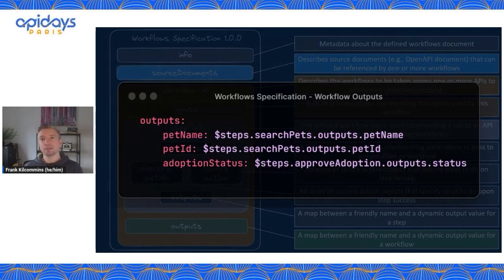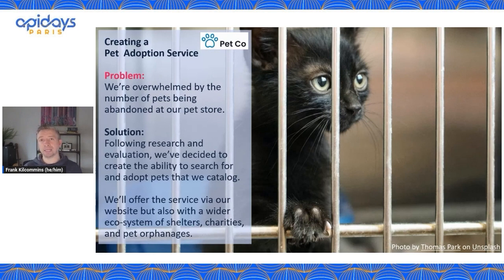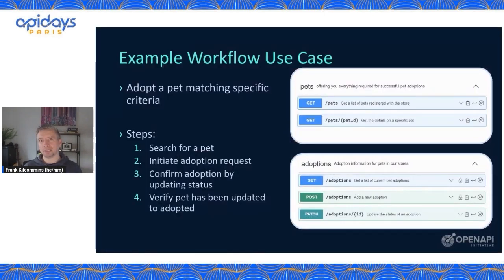Let's now apply the Workflows Specification to a particular use case. Let's assume we're working for a company called Petco and the problem we're trying to solve is being overwhelmed by the number of pets being abandoned at our pet store. We've decided we need some APIs and we're going to offer a service to search for and adopt pets that we catalog. We'll offer this to our own website but also externally towards a broader ecosystem of shelters, charities, and pet orphanages. We've done our API design work and created two different APIs: one for the pets resource and one for the adoptions resource, independently managed by different teams with separate OpenAPI descriptions.